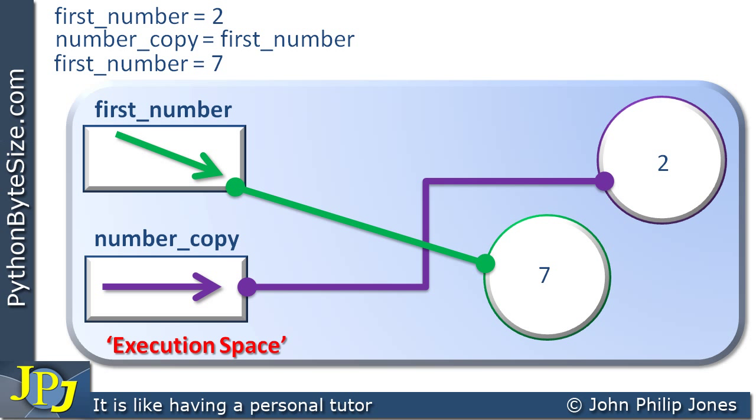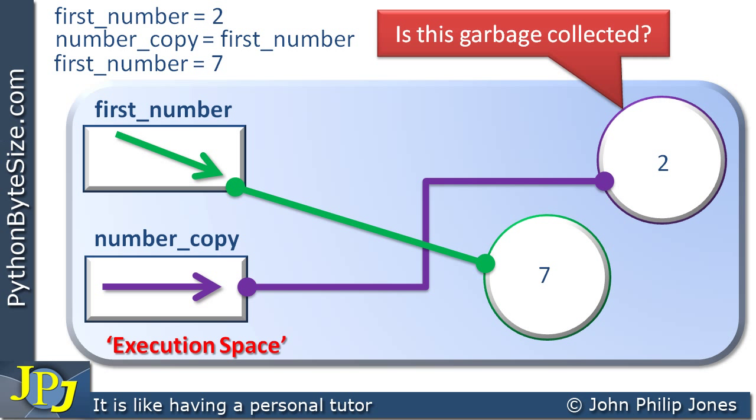We said in a previous video that when an object reference was removed from an object, that object would be garbage collected. Now is this one garbage collected because it lost the binding to the object reference first_number? Well the answer is clearly no. The reason being it is now bound to the object reference number_copy, by this line as we can see here. So this particular object is not garbage collected because although it lost its original object reference, it's got another one now. And that's what the Python language looks for - it looks to see if there are any objects in the execution space that are by themselves, and by that I mean don't have an object reference bound to it.